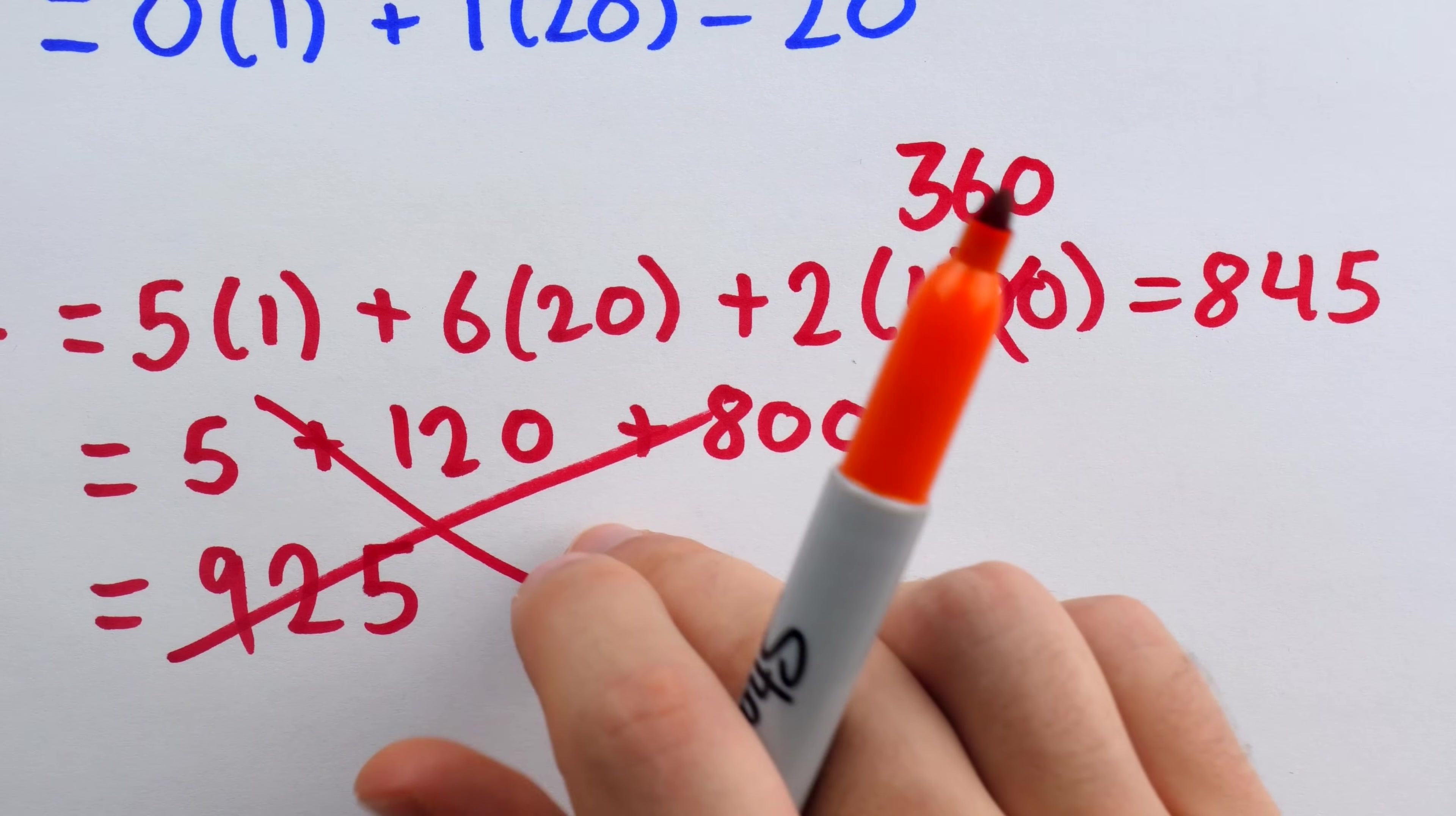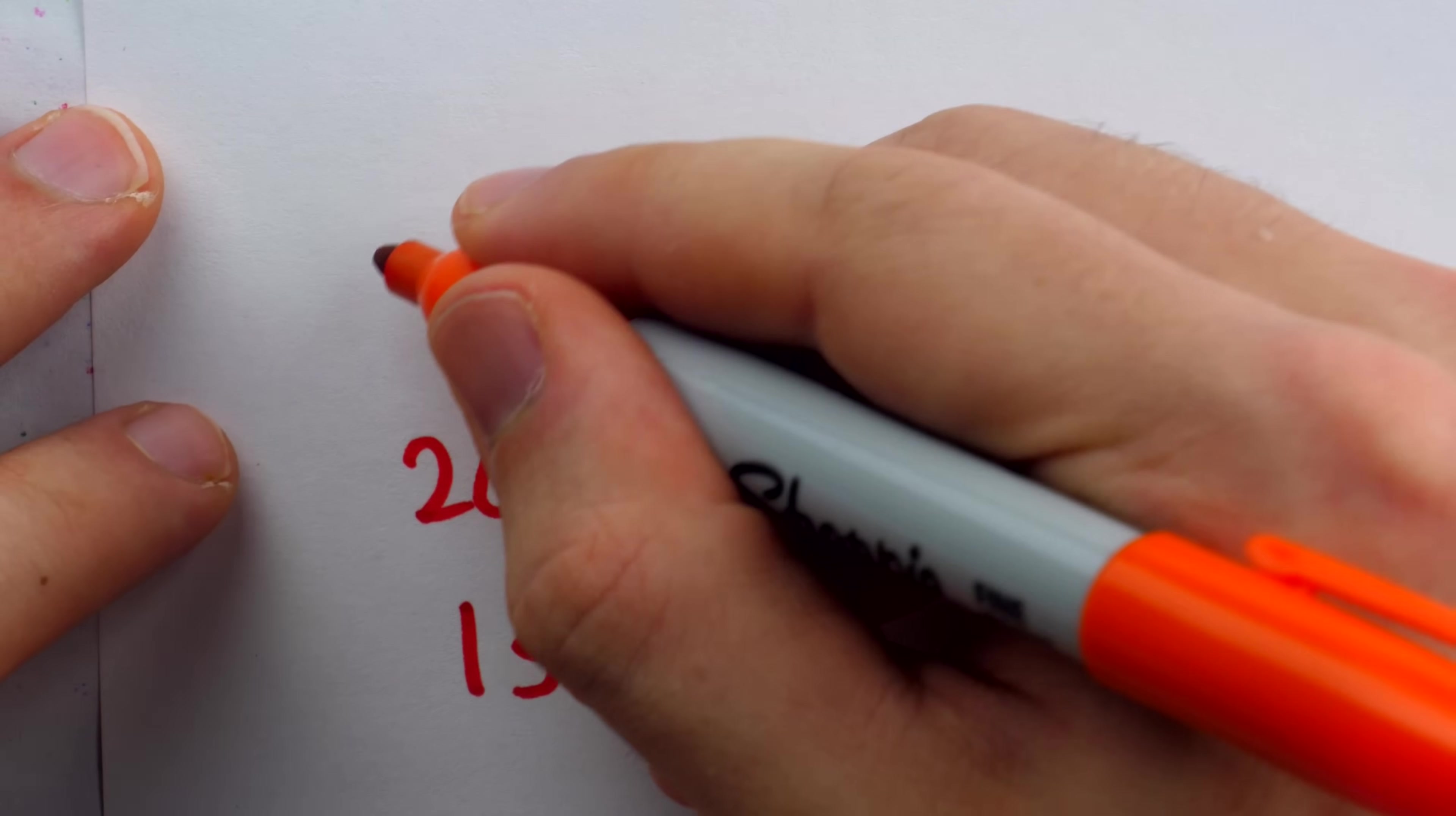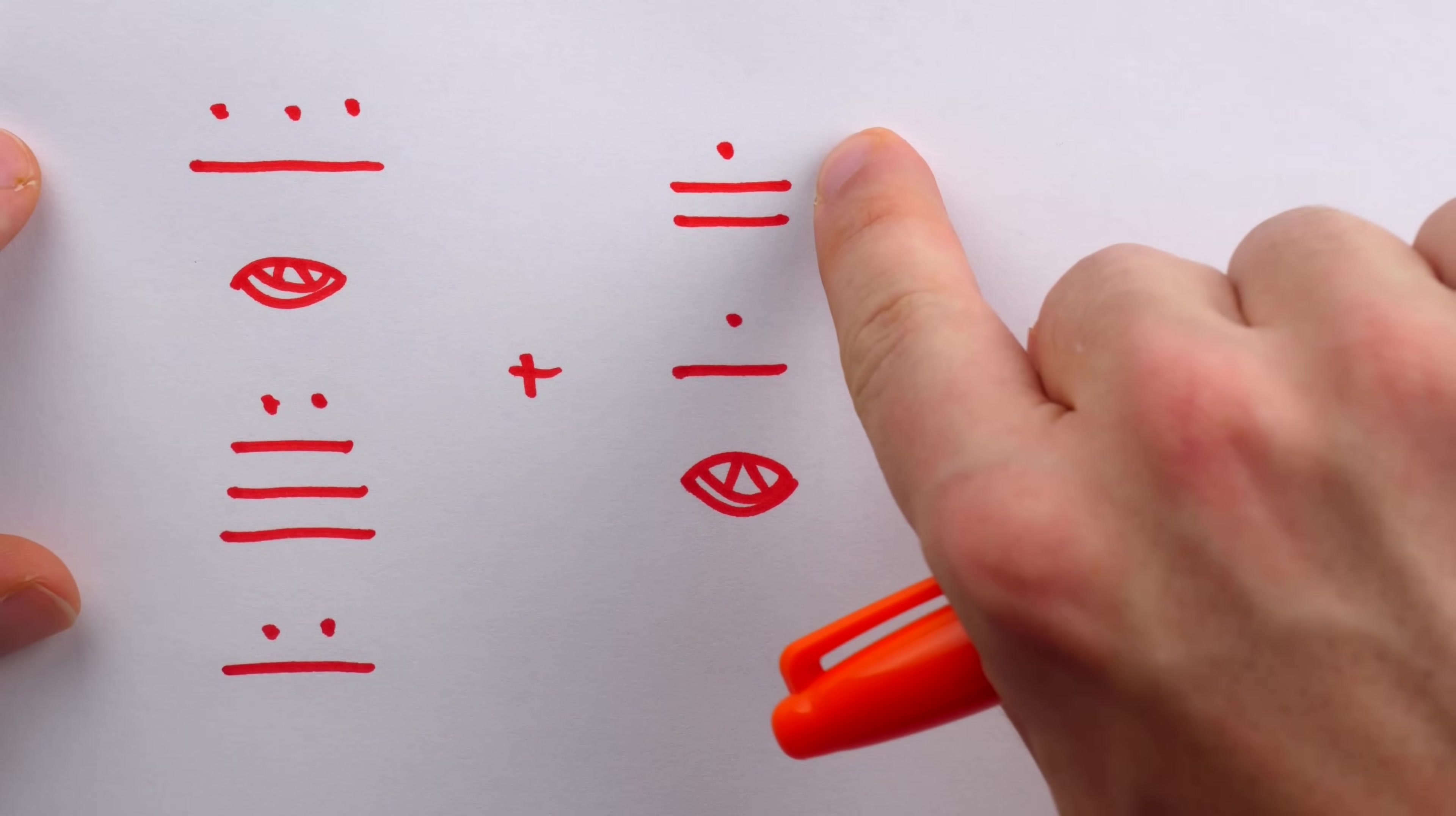While they break from the pure base 20 system by multiplying by 18 from this place value to this one, thereafter, they only multiply by 20s to get the next place values. Thus, in the Mayan number system, the bottom place value would represent ones, the next one up would represent 20s, the next one up multiplying by 18 represents 360s, and then from there we multiply by 20s. So after that, the next place value would represent 7200s, and then 144 thousands, and so on, continuing to multiply by 20. Respecting that the third place value represents groups of 360, let's see if we can do this addition problem using Mayan numerals.